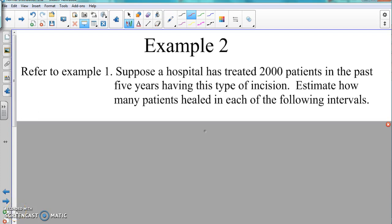Example two. We're going back again to what we talked about in example one. We had a standard deviation of 20, a mean of 240. For this, we're going to figure out our intervals and see how many of the 2000 patients in a hospital treated for this incision will be healed within each range.